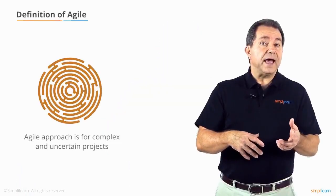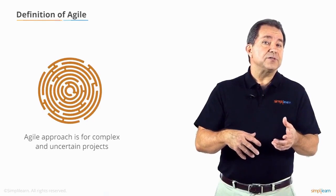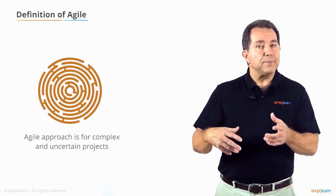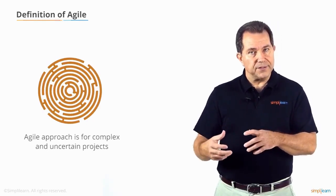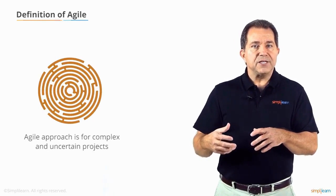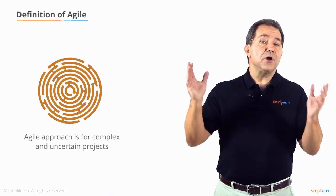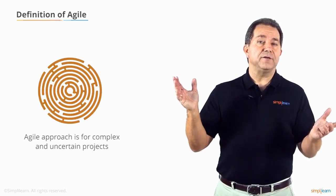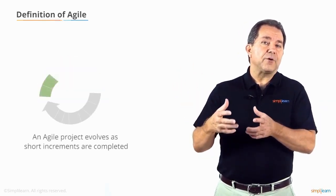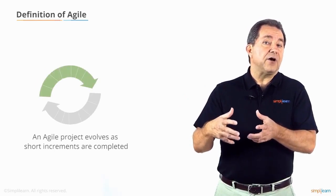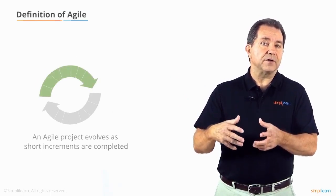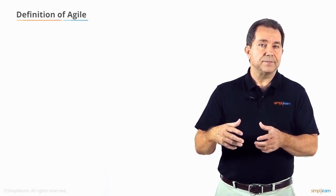The Agile approach is for projects that are more complex and uncertain. In Agile there is no heavy detailed planning upfront. Rather, an Agile project evolves as short increments are completed.